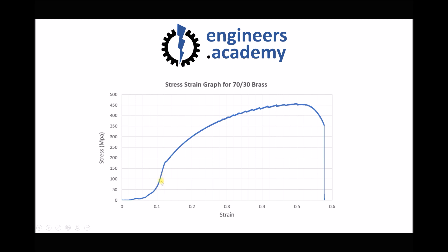If we think back to the structure of the material, the layers are not sliding over each other within the elastic region — they're stretching and displacing but remaining in the same orientation. However, when we reach this point here, this is the yield strength of the material. This is where the material no longer elastically deforms and begins instead to plastically deform. For this particular material we see that occurring at around 180 megapascals, where the layers of the material begin to slide over one another.